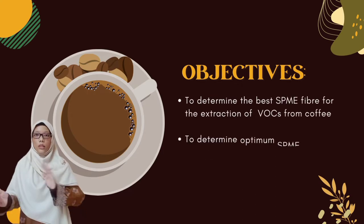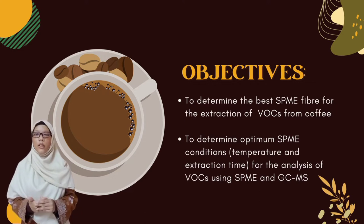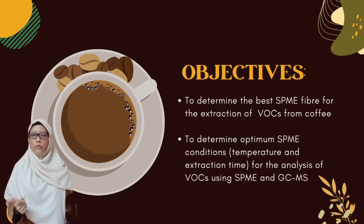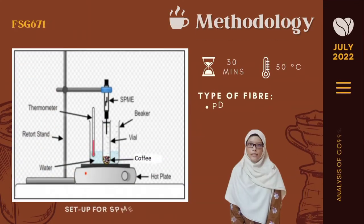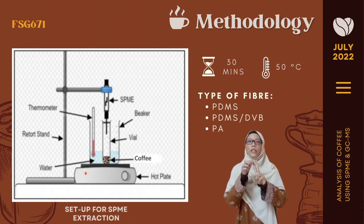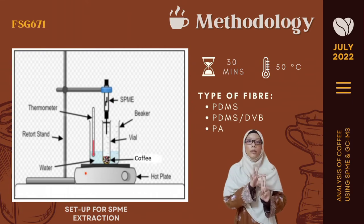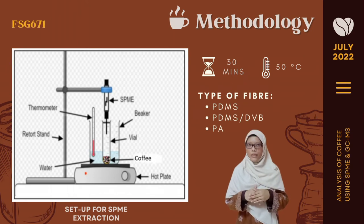The objective of this study is to determine the best fiber for extraction of VOCs from coffee, and to establish optimal conditions for the analysis of VOCs from coffee using SPME and GCMS. The methodology is divided into two parts: selection of the best fiber, and optimization of SPME parameters. The best fiber needs to be chosen first, since the type of fiber and analyte can influence the performance of SPME.